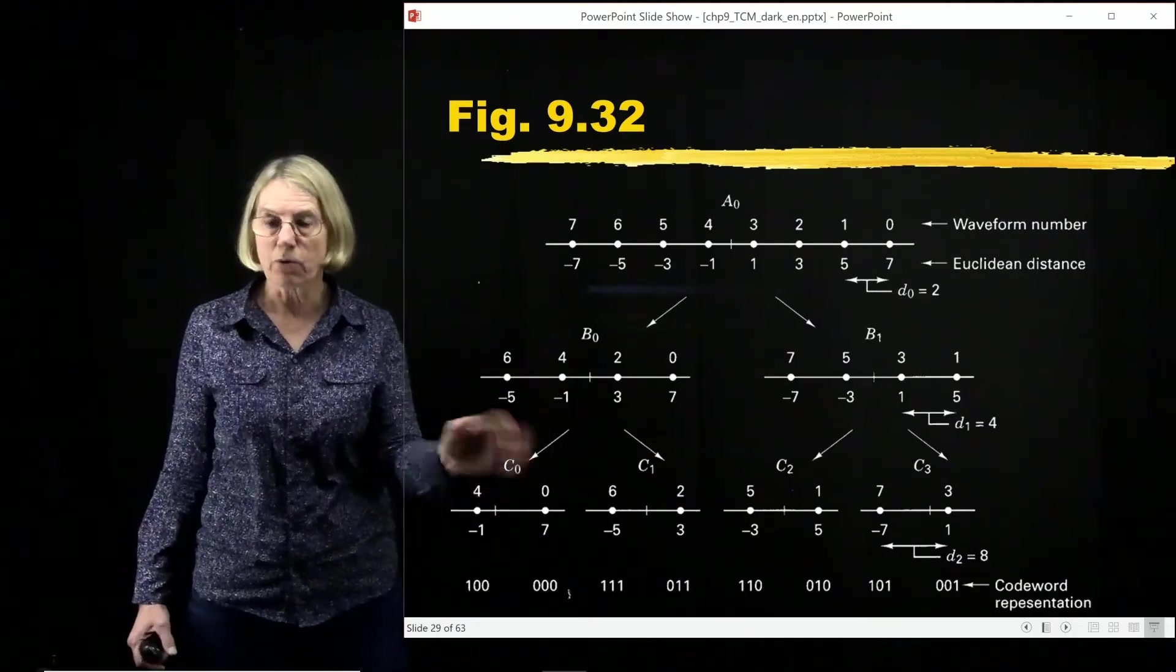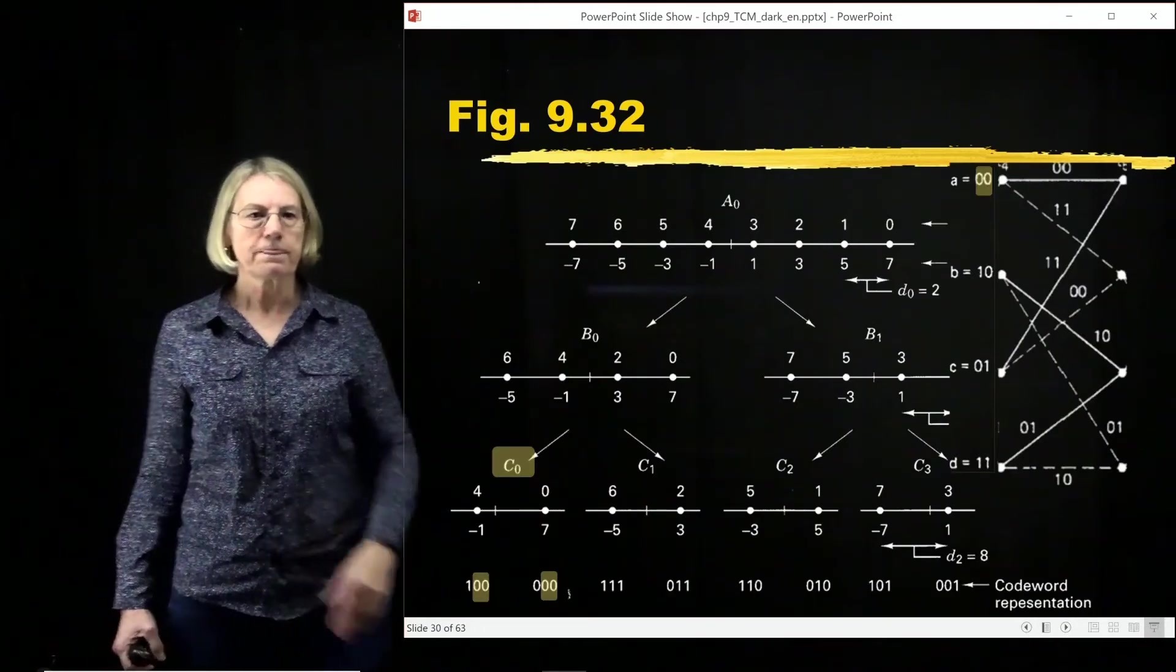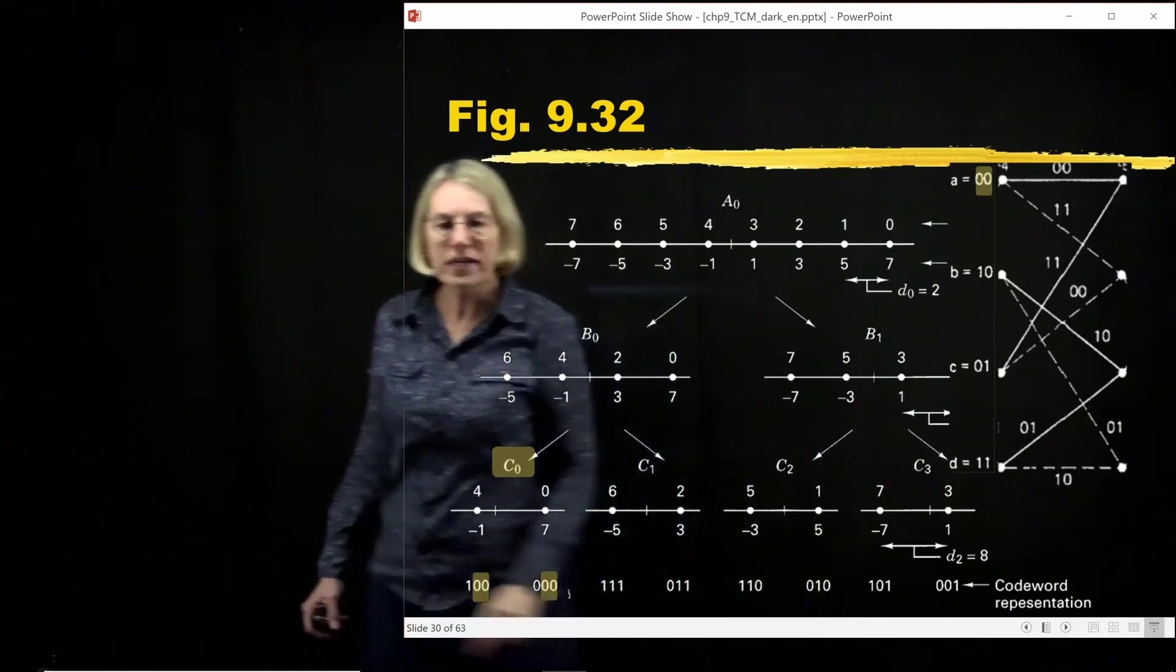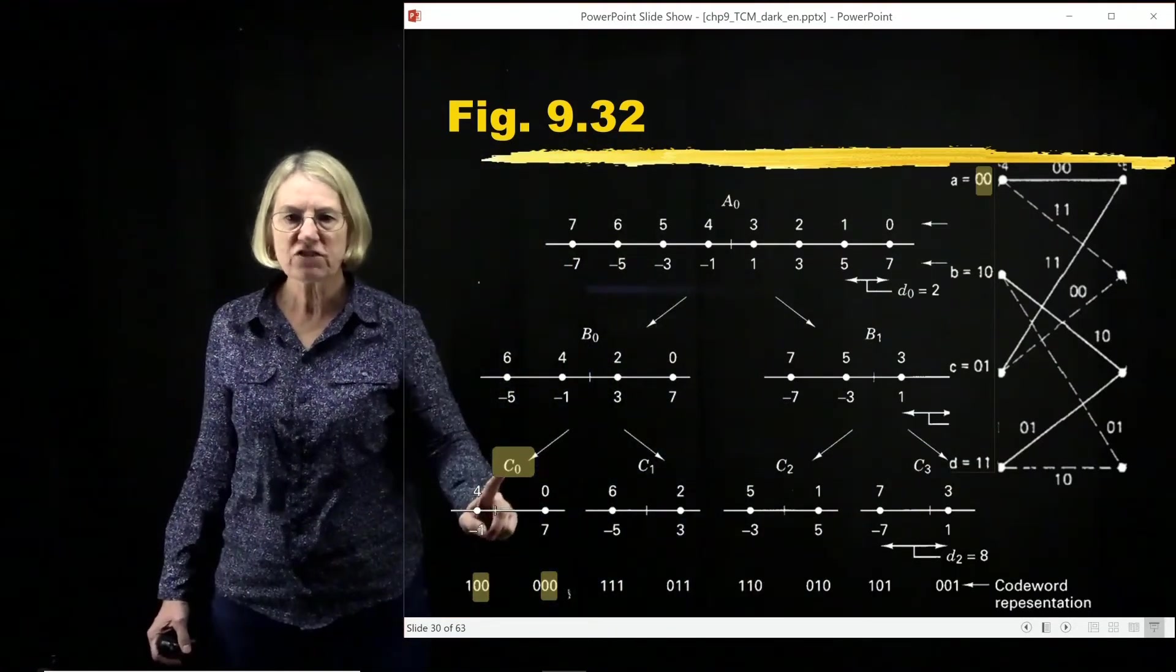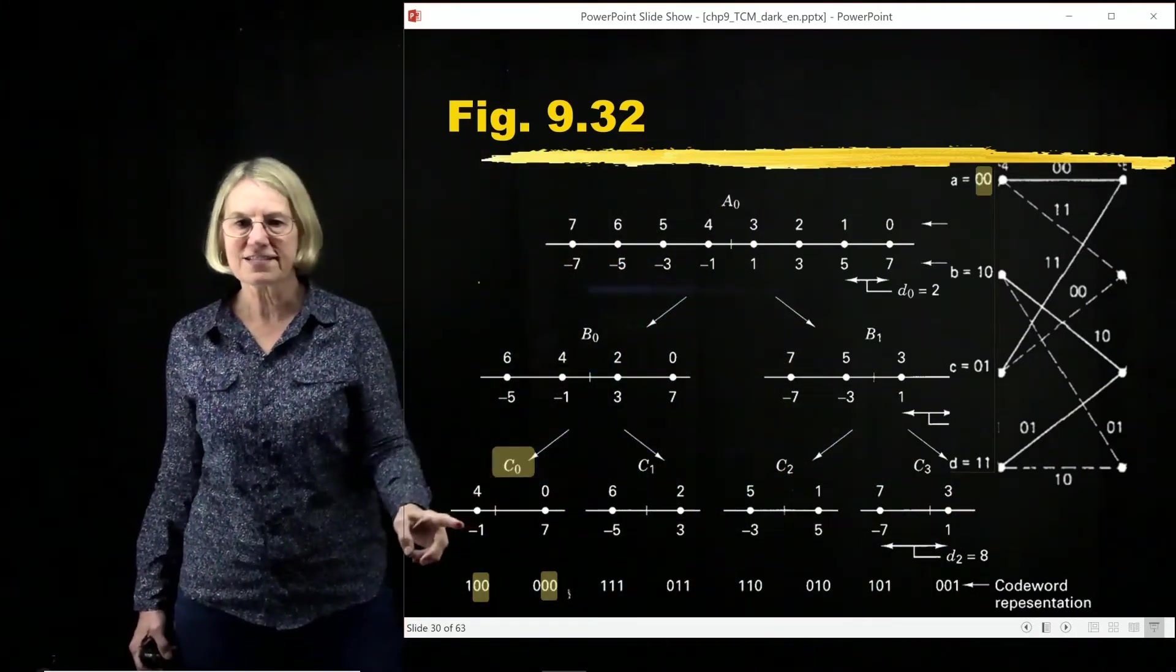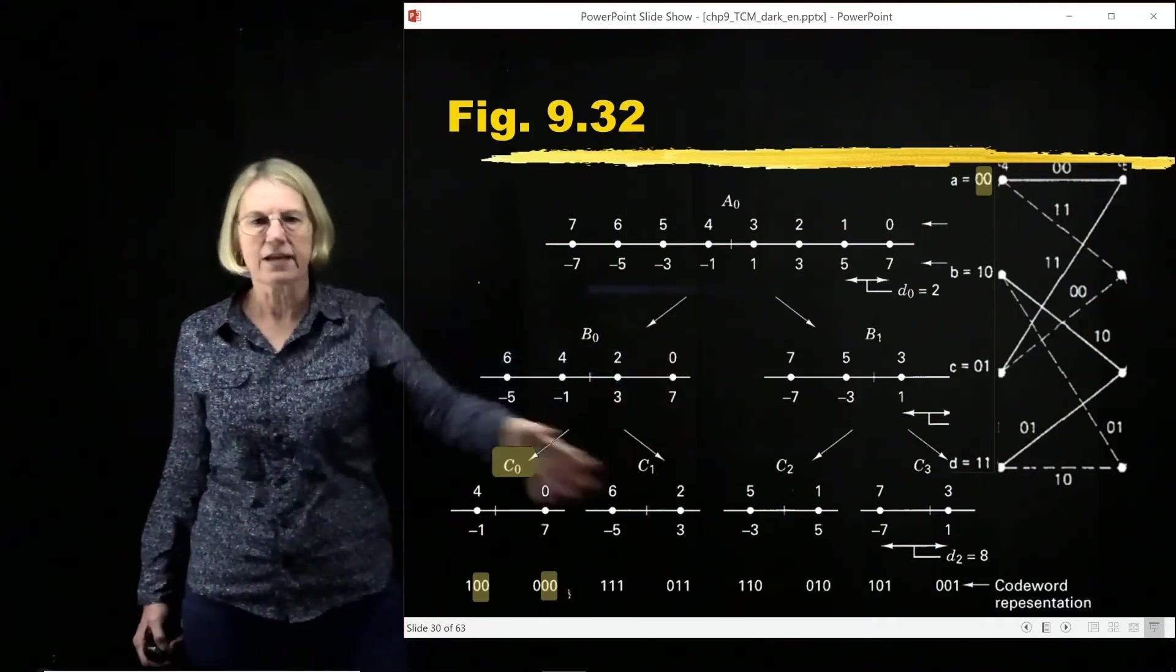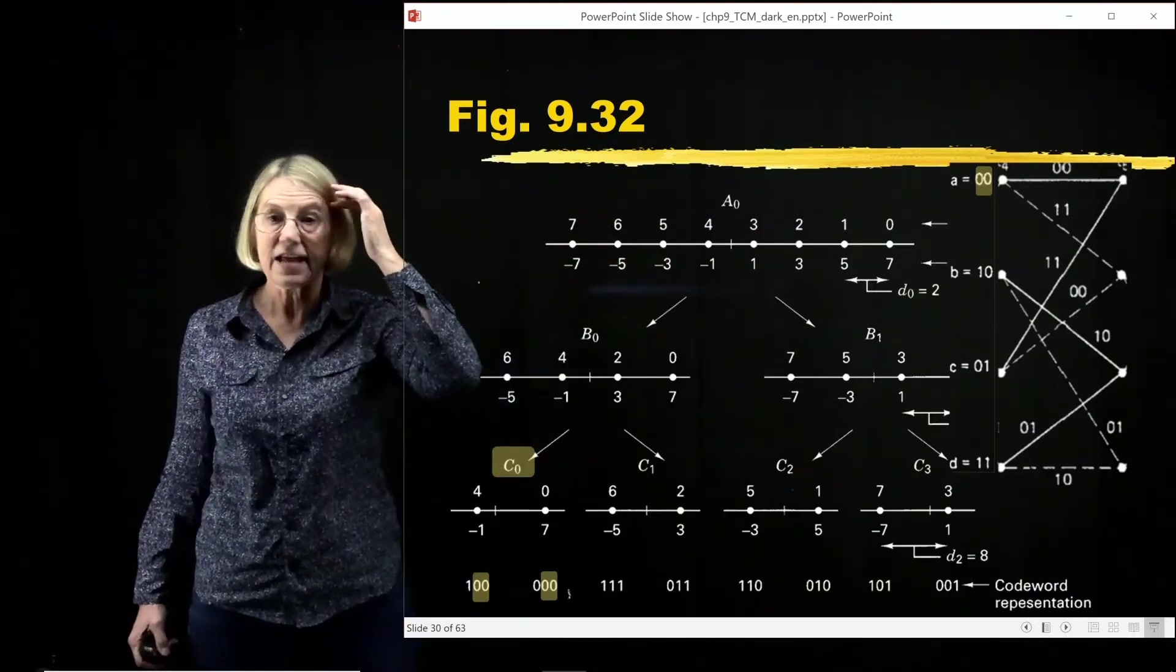We're going to choose an example where the numbers are easier to see what's going on. So, for instance, if I look at the convolutional code, which state I am in is determined by which of these sets that I fall in. So, for instance, C0, the set and the set partitioning. So I have four sets at the bottom of my set partitioning. The first one, C0, I assign that to state A.